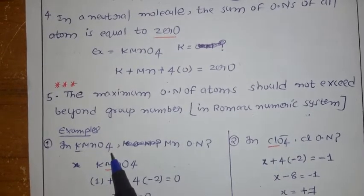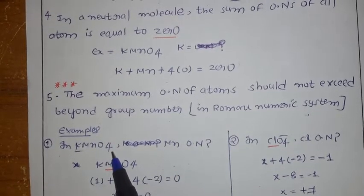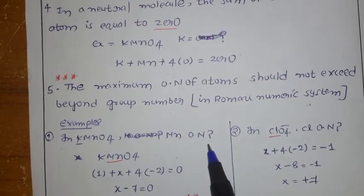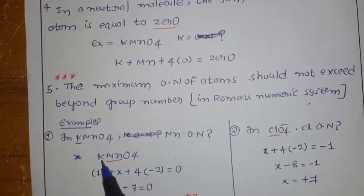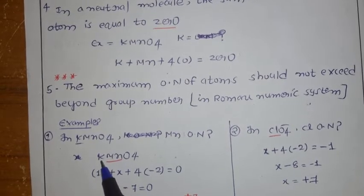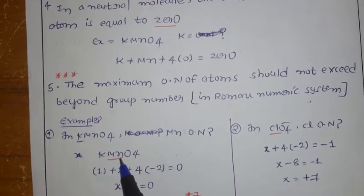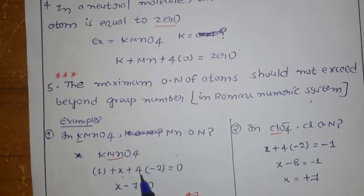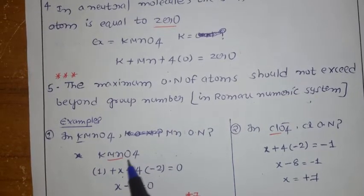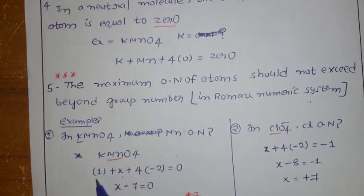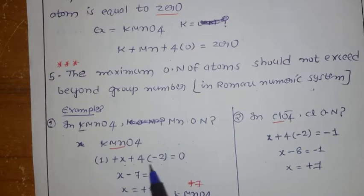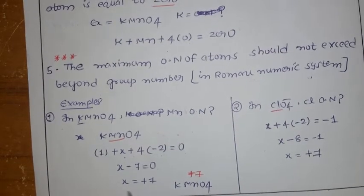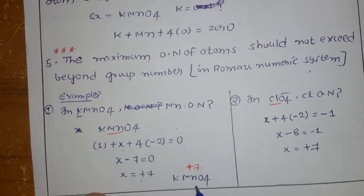In KMnO4, what is the manganese oxidation number? Assume manganese as X. Potassium is group 1, so plus 1. Write: plus 1 plus X plus 4 times minus 2 equals 0 (neutral molecule). Simplifying: X minus 7 equals 0, so X equals plus 7. The oxidation number of manganese in KMnO4 is plus 7.